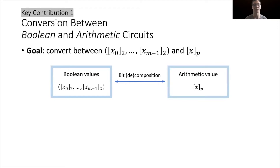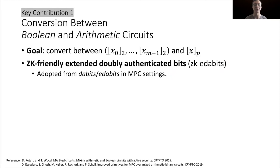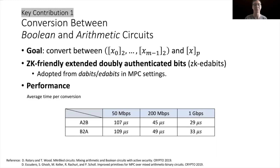There are several key contributions of our protocol. The first is the conversion between Boolean and arithmetic circuits. The goal is to convert between bits X0 to X_{l-1} authenticated in Boolean circuits and a field element X authenticated in arithmetic circuits. We must prove that these bits X0 to X_{l-1} are the bit decomposition of the field element X. Since this setting is similar to conversion in MPC, we adopted methods such as dabits and edabits. Based on this, we developed zero-knowledge proof-friendly extended authenticated bits, which are used to prove the correctness of the conversion. In a one-gigabit-per-second network, it only takes around 30 microseconds per conversion.